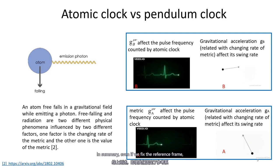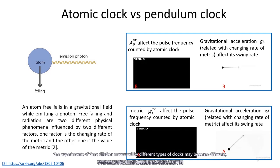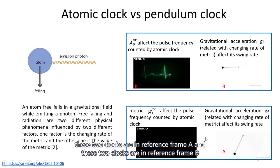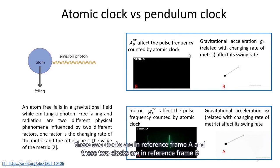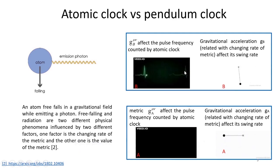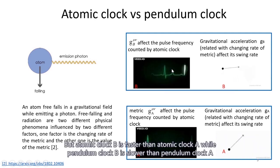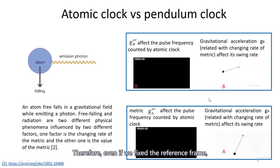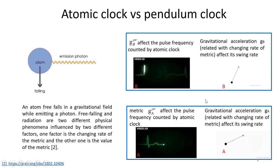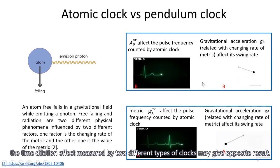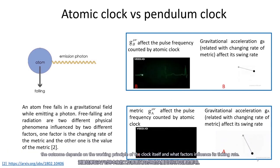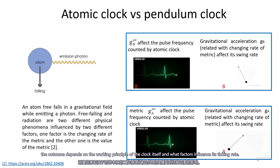In summary, even if we fix the reference frame, experiments of time dilation measured by different types of clocks may give different results. Atomic clock B is faster than atomic clock A, while pendulum clock B is slower than pendulum clock A. Therefore, even if we fix the reference frame, the time dilation effect measured by different types of clocks may give opposite results. The outcome depends on the working principle of the clock itself and what factors influence its ticking rate.